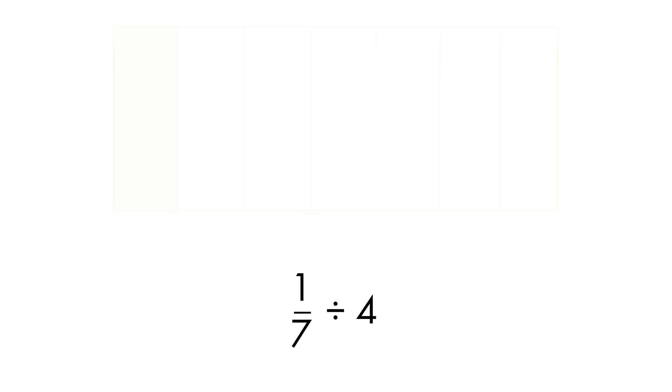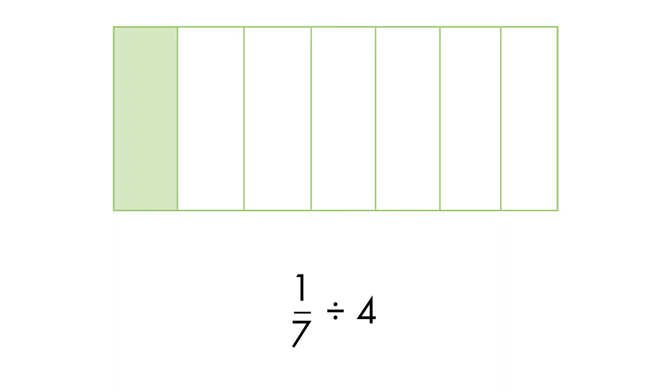Let's divide one-seventh by four. Draw horizontal lines to divide one-seventh into four equal parts. We now have twenty-eight equal parts. So each square is one-twenty-eighth.